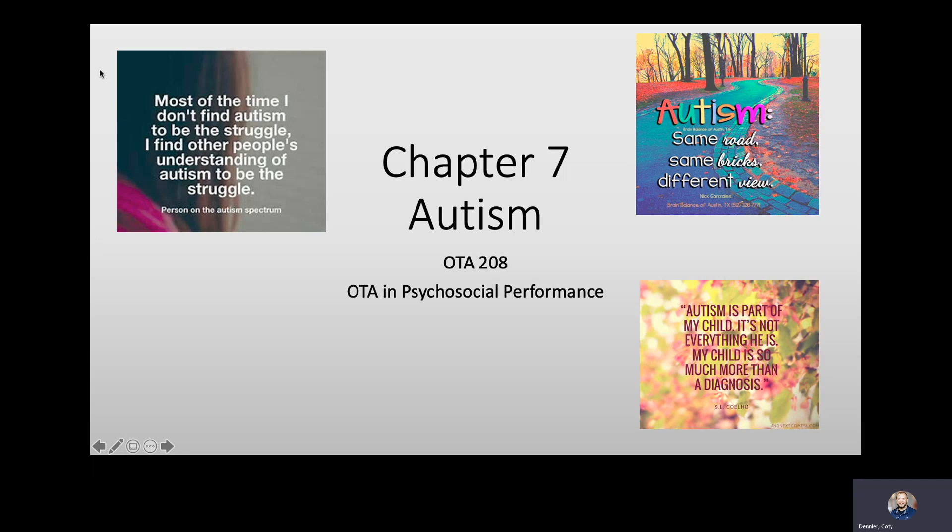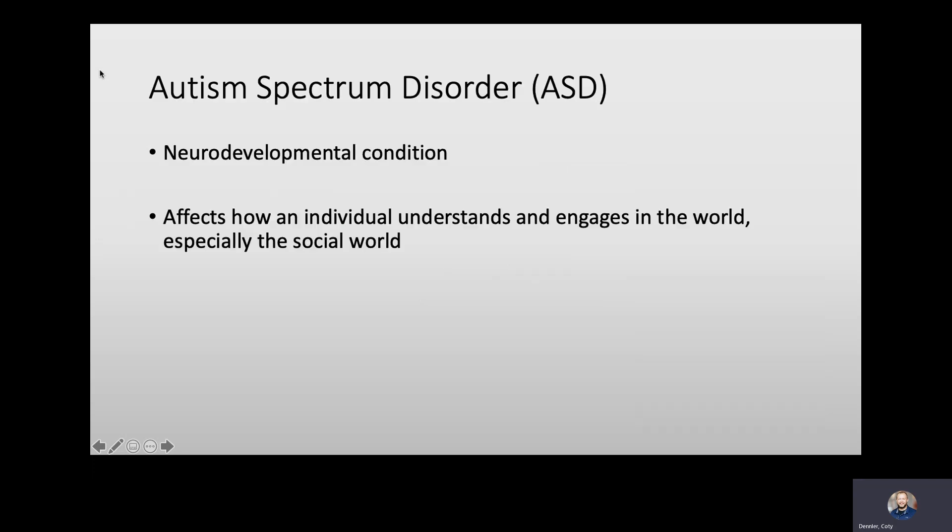A goal of mine in this lecture is to break down your preconceived notions of autism and show you that there are so many different levels. It's a broad spectrum disorder that can encompass a lot of different aspects, from very mild to very severe. Autism Spectrum Disorder — we'll often refer to it as ASD — is a neurodevelopmental condition that includes difficulties with social communication, interaction deficits, and different repetitive patterns of behavior and interests.